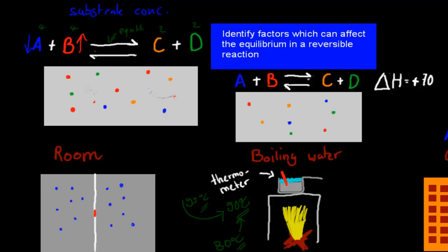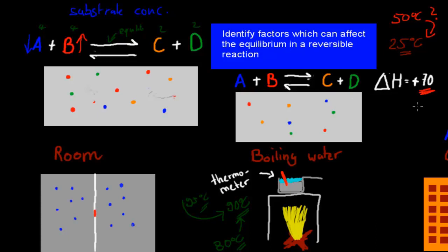So let's say, for example, in this example of our chemical reaction, we want to have a constant temperature — a room temperature of about 25 degrees Celsius. Let's say, for whatever reason, the temperature has gone up to 50 degrees Celsius. What could we do to bring it back down? Well, in this reaction, we have A and B colliding, and when they collide, they produce C and D. And this actual reaction is endothermic, because this is endothermic, and what endothermic means is it absorbs energy.